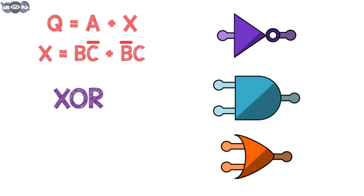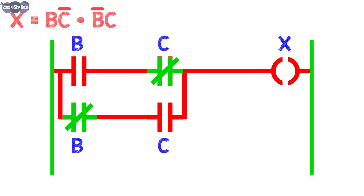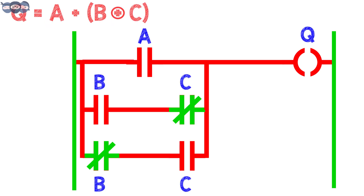Now it is easy to implement this logic. First, let us create the XOR ladder logic. The ladder logic is shown here and it matches with our equation. The final ladder logic for the equation of q is presented here. The input a is connected in parallel with the XOR combination of b and c. On simulating the ladder, we get the desired results.